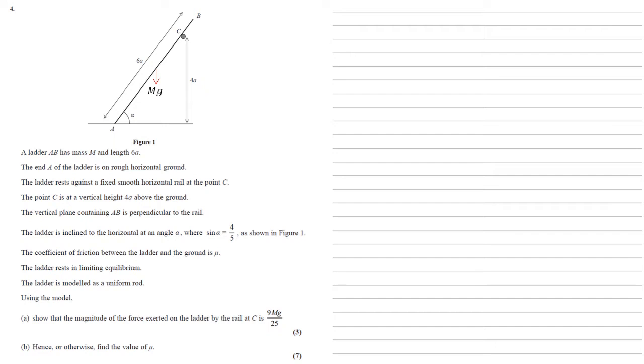It's got to be halfway because it's a uniform rod and it's going straight down. The ladder is resting on the ground at A so we know that we've got a reaction force R going vertically upwards and the ground is rough so we've got our force due to friction of mu times R which is pointing to the right.